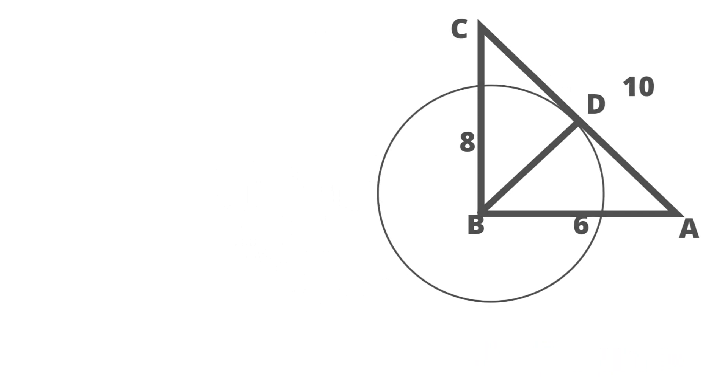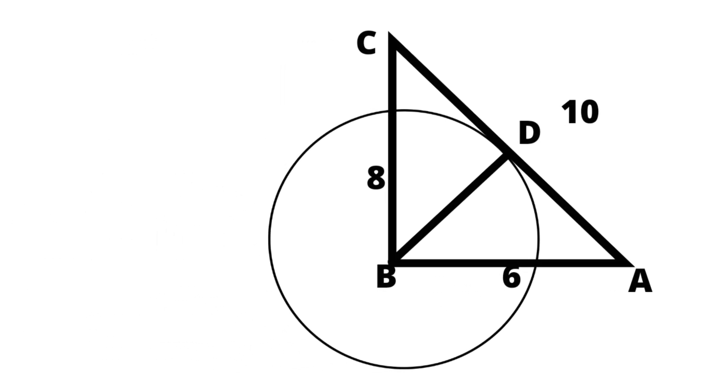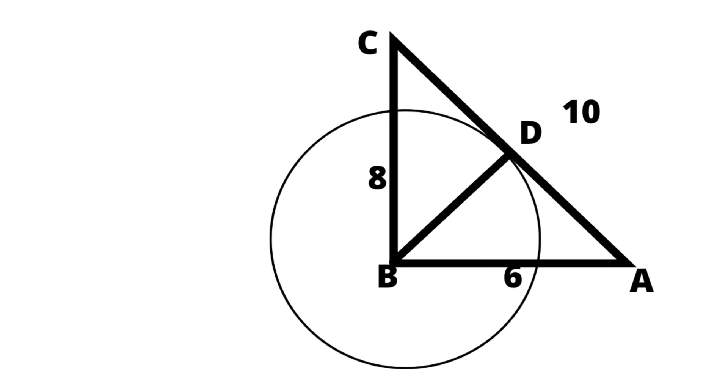The question is: in right angle triangle ABC, AB is equals 6 centimeters, BC is equals 8 centimeters, and hypotenuse AC is equals 10 centimeters.